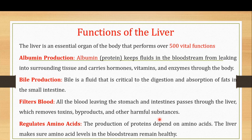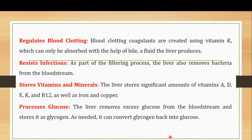The liver is also responsible for regulating the level of amino acids. Amino acids are very important for the production of proteins, which means the liver helps maintain a healthy protein level in the body. The liver makes sure that the amino acid level in the bloodstream remains healthy, because if it is not, the production of proteins in the body can be compromised.